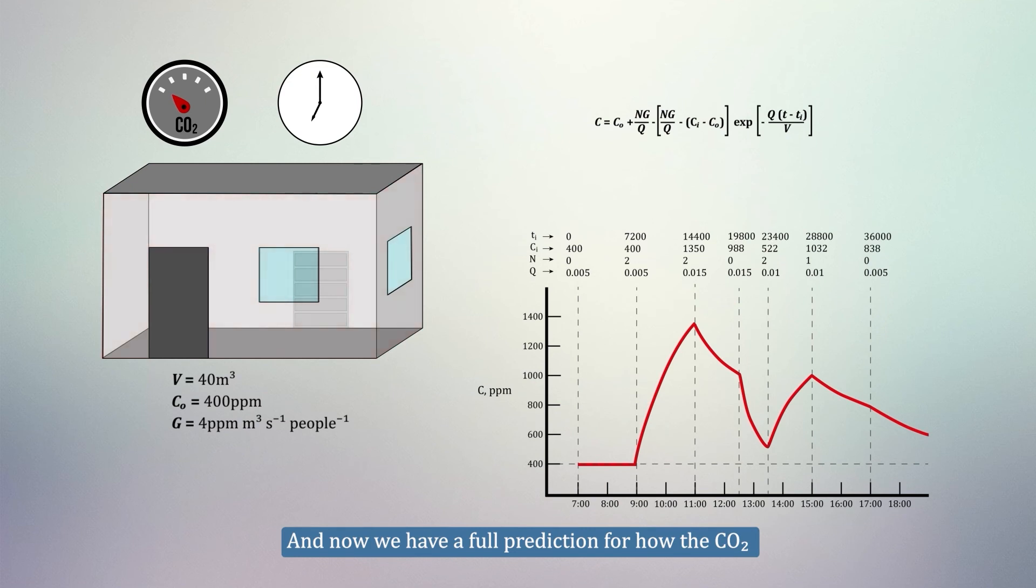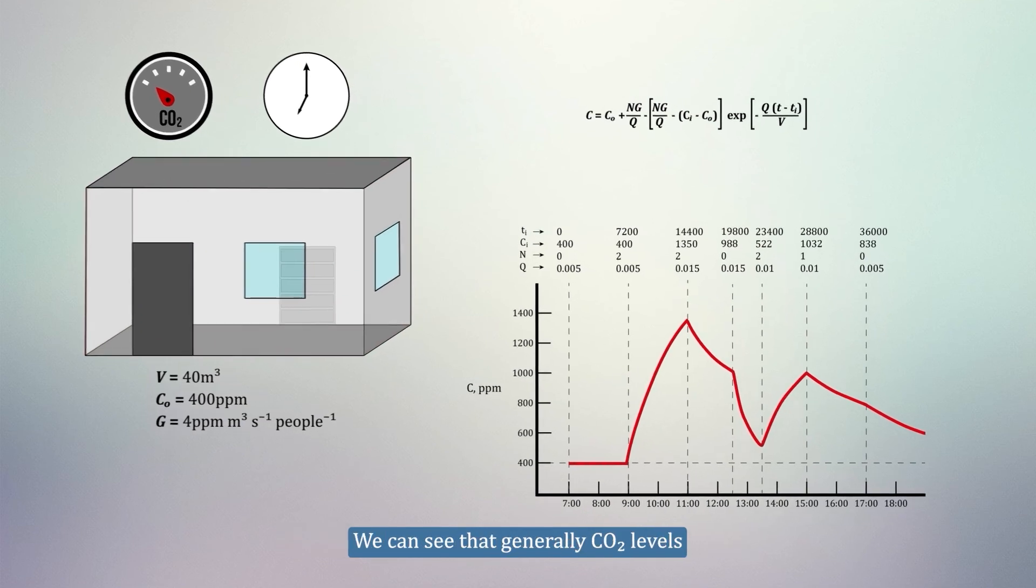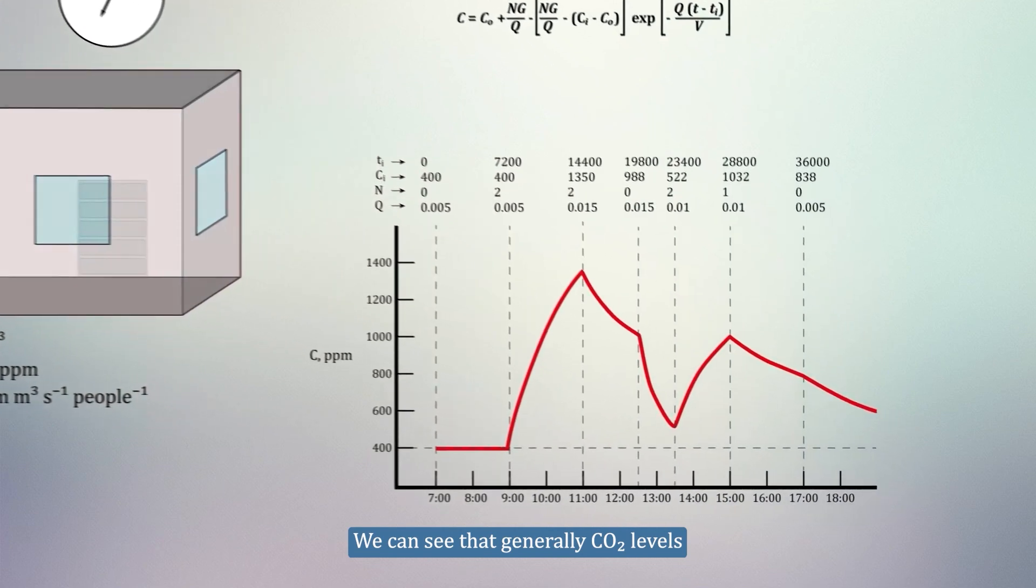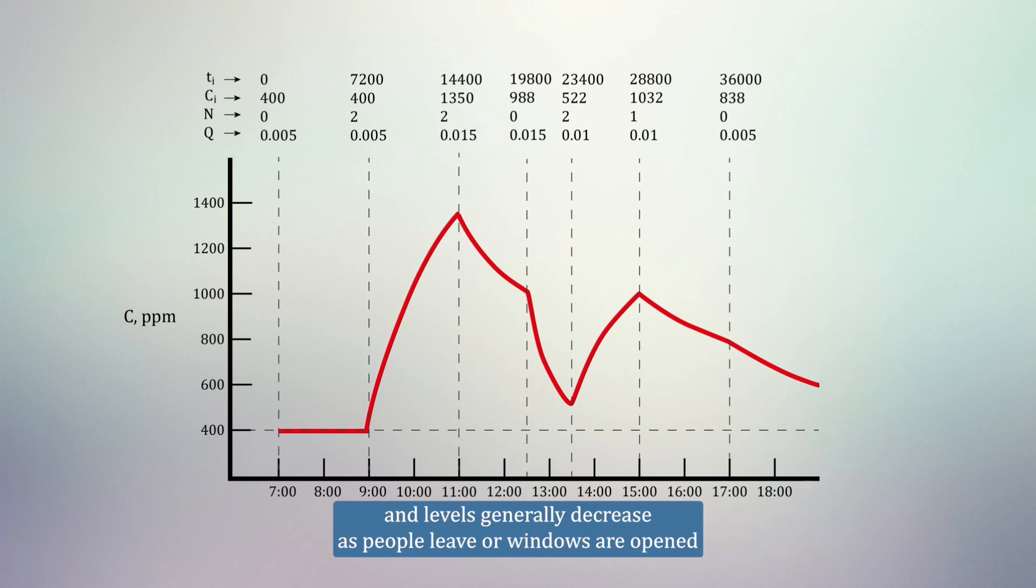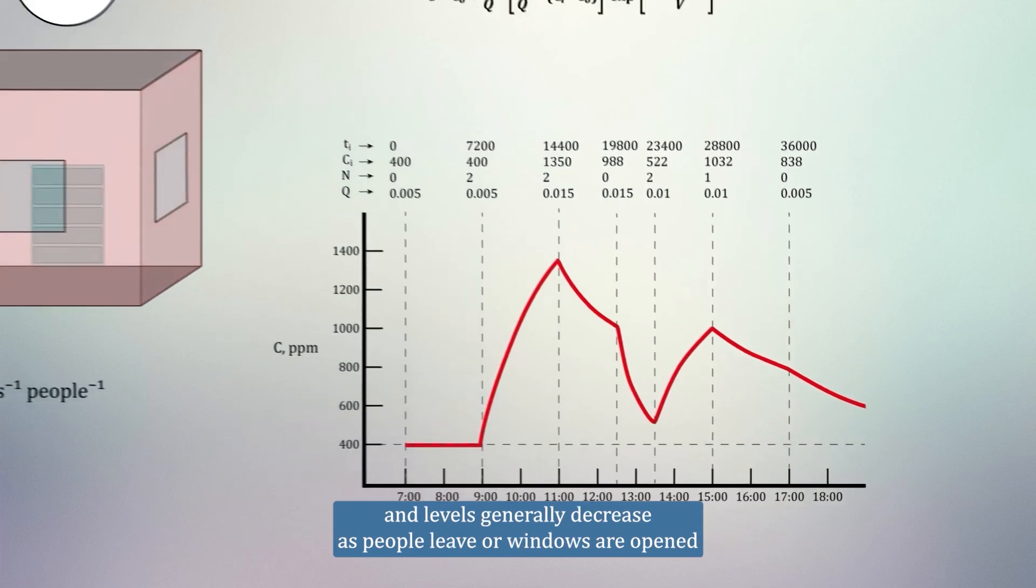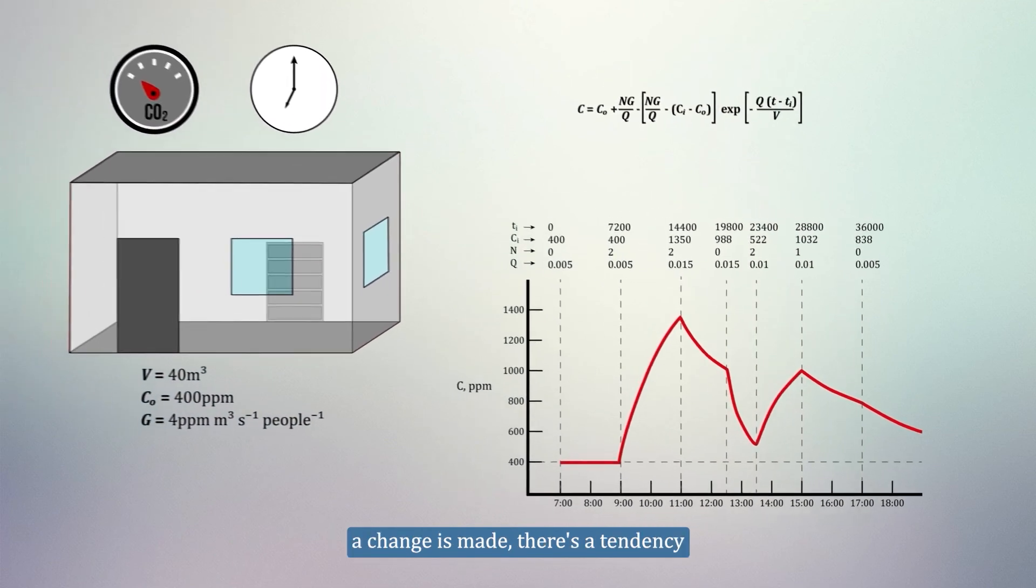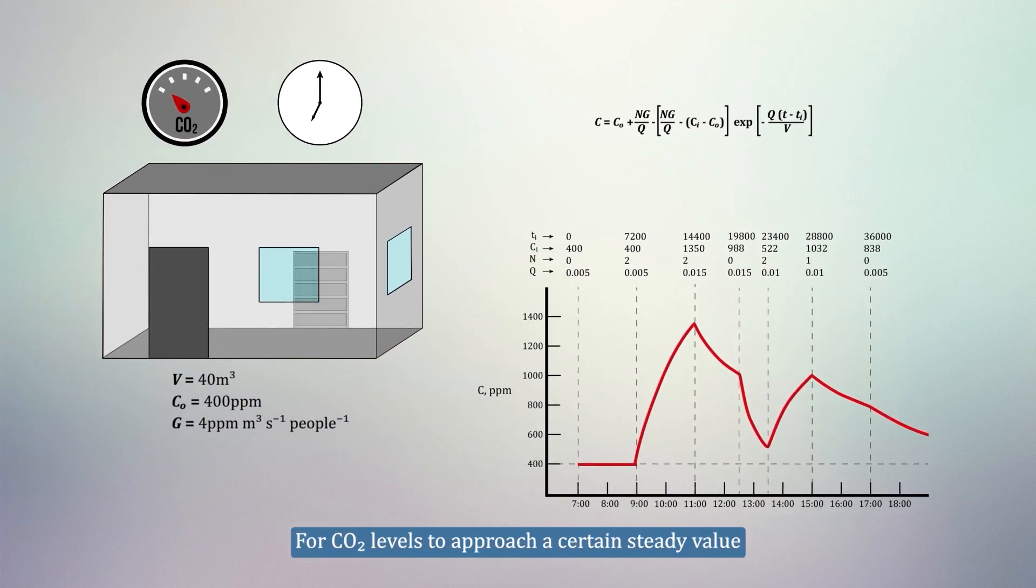And we now have a full prediction for how the CO2 levels will change throughout the day. We can see that generally, CO2 levels increase as more people enter the room or windows are shut, and levels generally decrease as people leave or windows are opened. We also see that once a change is made, there is a tendency for the CO2 levels to approach a certain steady value.